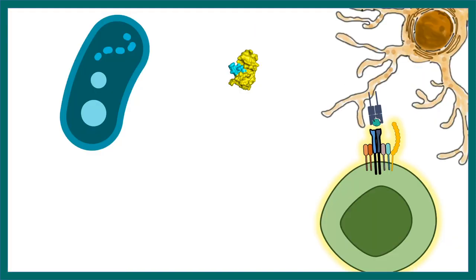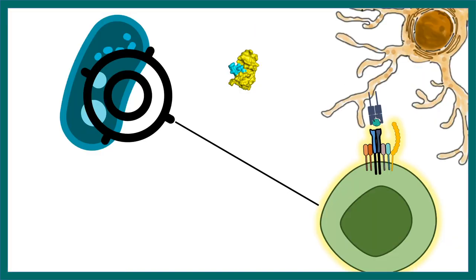As a result of this interaction, the T cell generates several responses against the bacteria, and the nature of this response is highly specific. This is part of the adaptive immune response, whose hallmark feature is specificity.